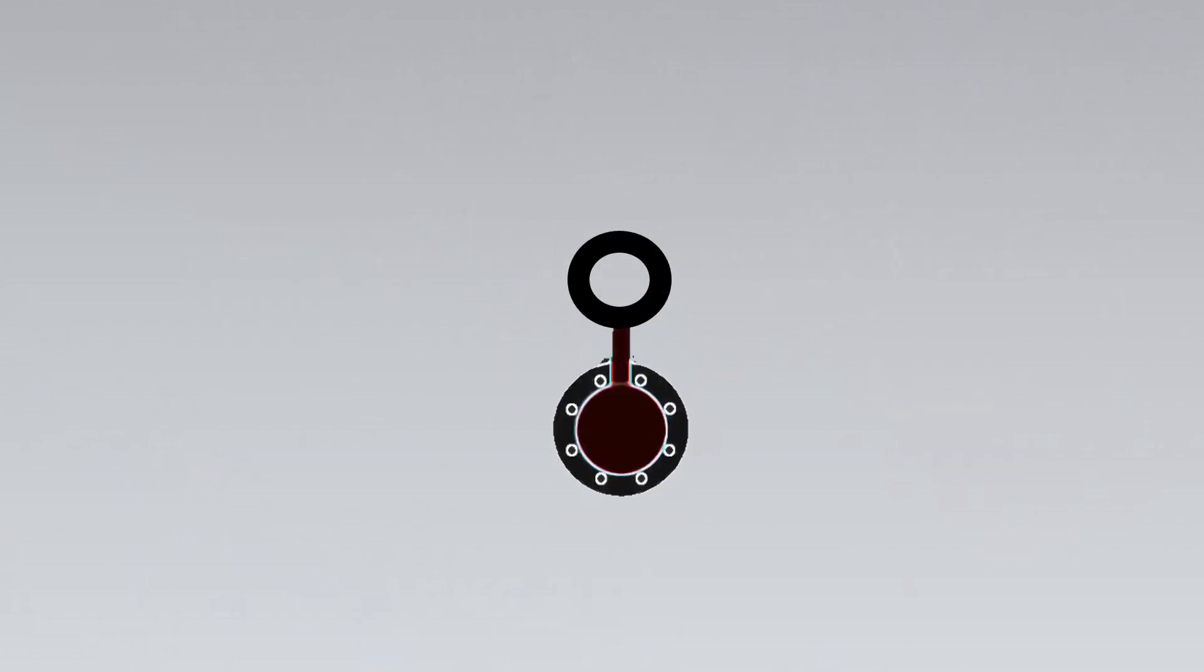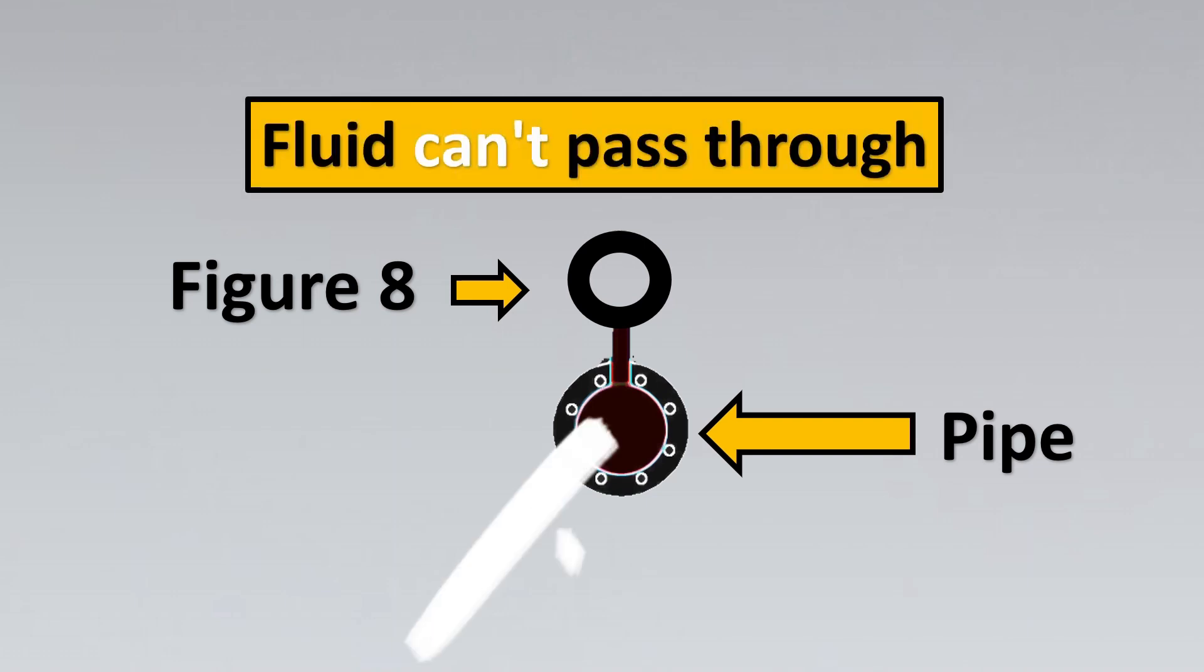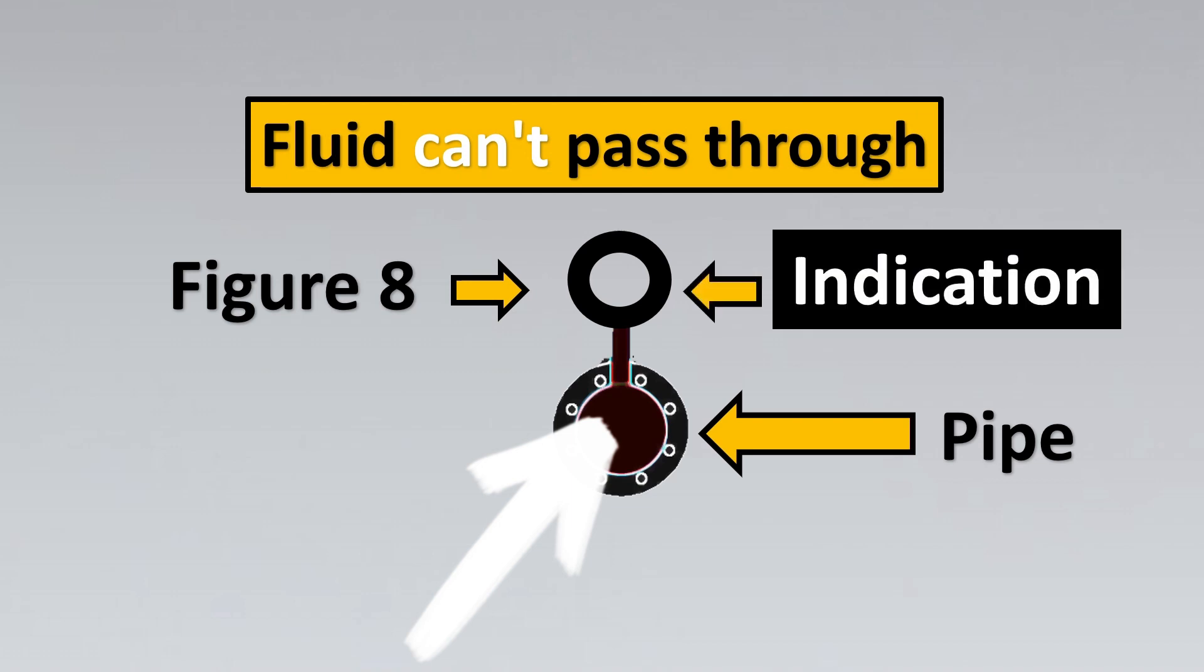Now getting this to our example, imagine this is your figure 8 blank put into pipe. Once you see here, because the solid portion is put in the pipe, the flow can't pass through it, and this also can be represented with this indication. So if the hollow portion is on top, that means the blank or the solid portion is put inside the pipe and the flow can't pass through it.